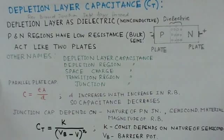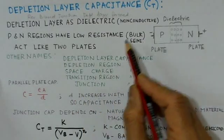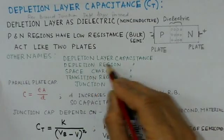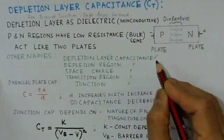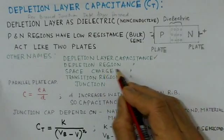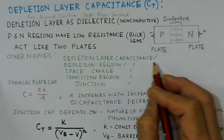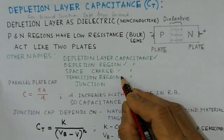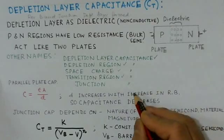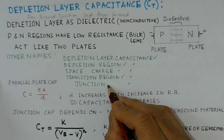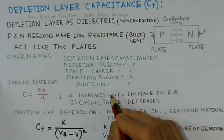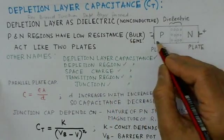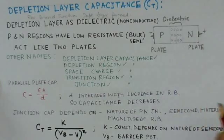Now this depletion layer capacitance has been given different names. We call it depletion layer capacitance, also known as depletion region capacitance. The other name is space charge capacitance. Another name is transition capacitance. And the simplest name is the junction capacitance. These are the various names for the capacitor formed by the reverse biased PN junction.